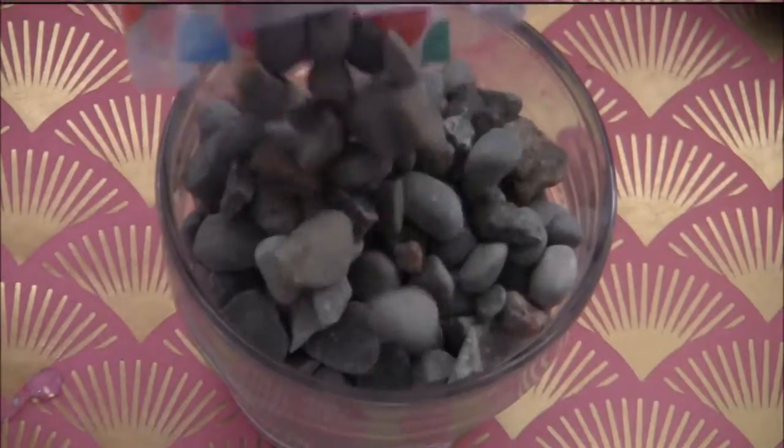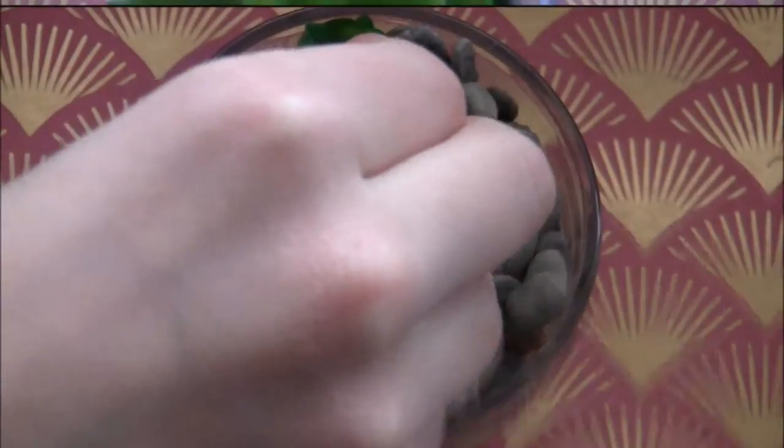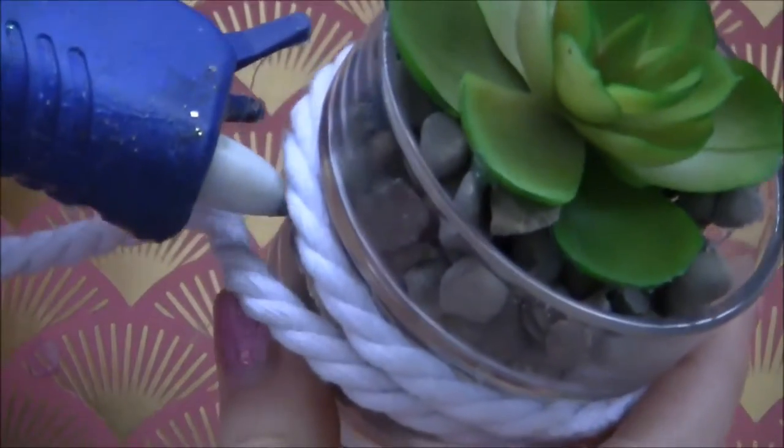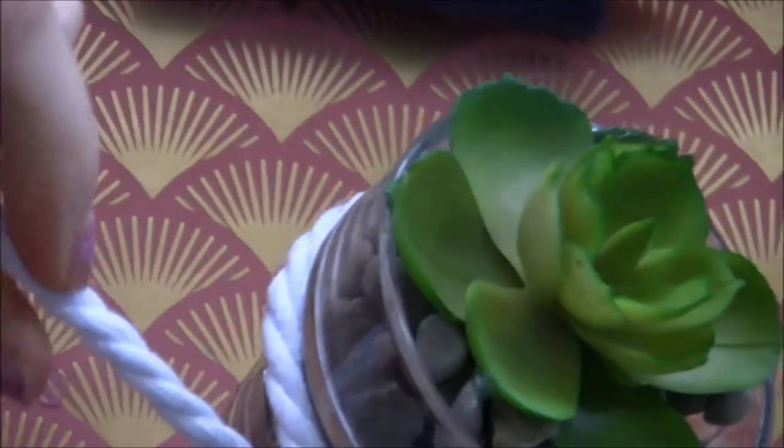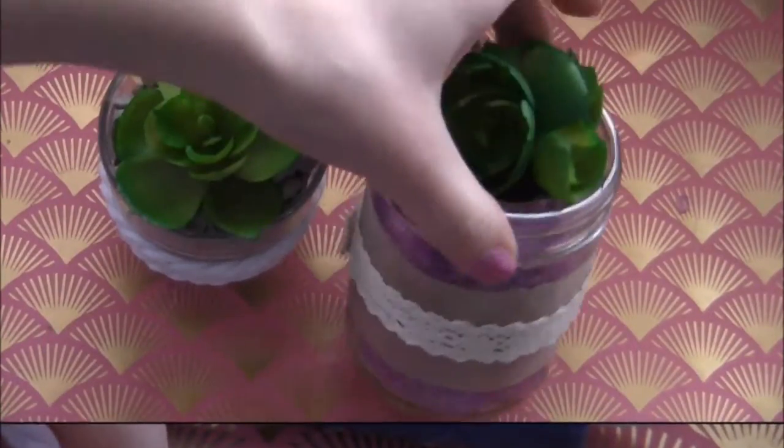For my other jar, I'm just filling it with some stones that I found off the ground. And then I'm going to hot glue a succulent in the middle. And I'm just going to hot glue a piece of rope around the outside. And that's it. My jars are finished.